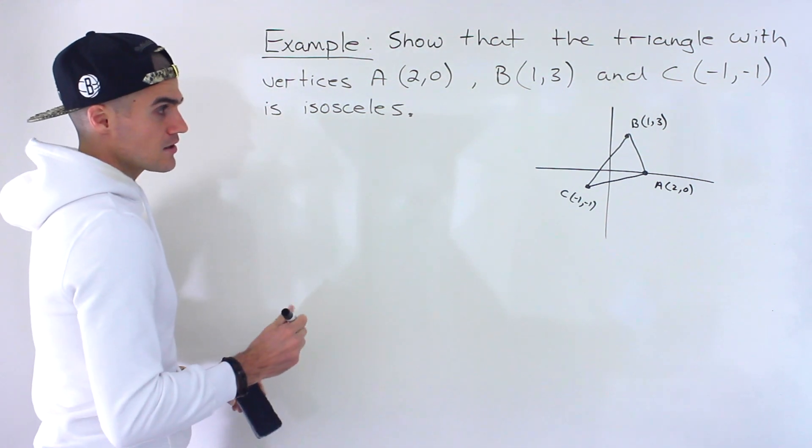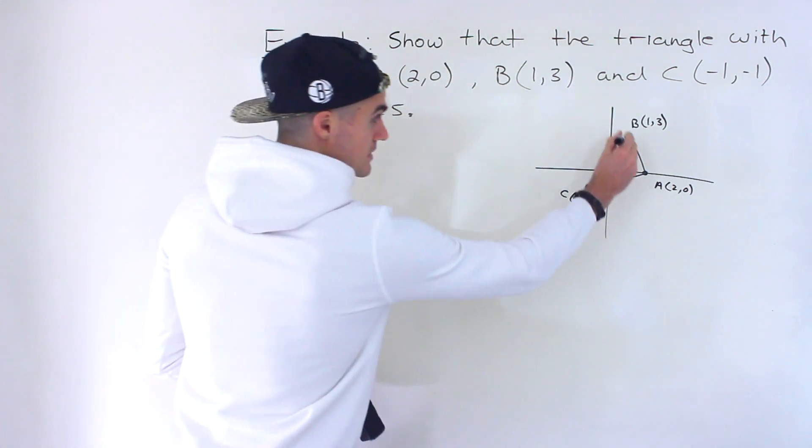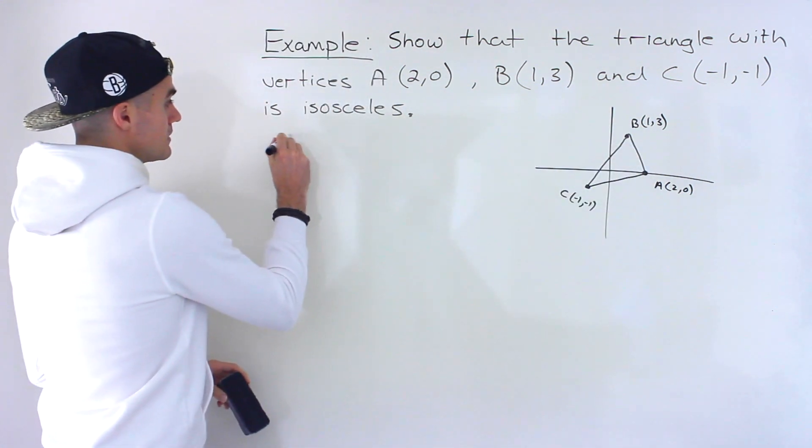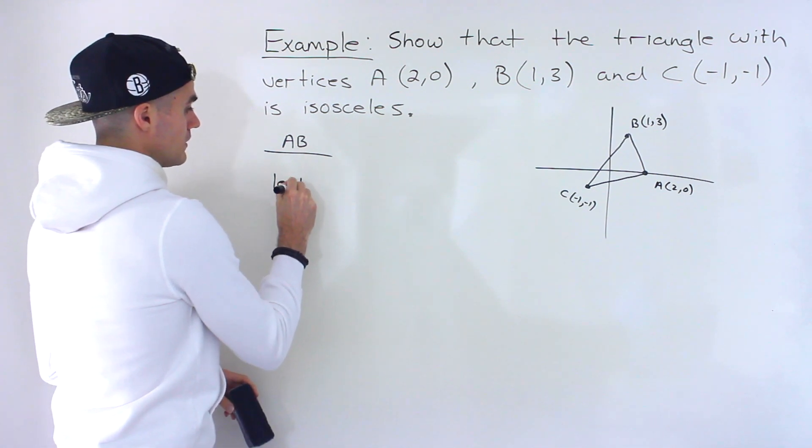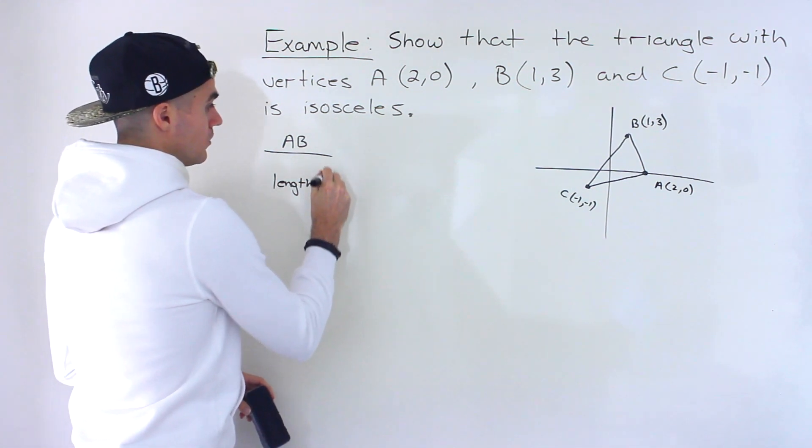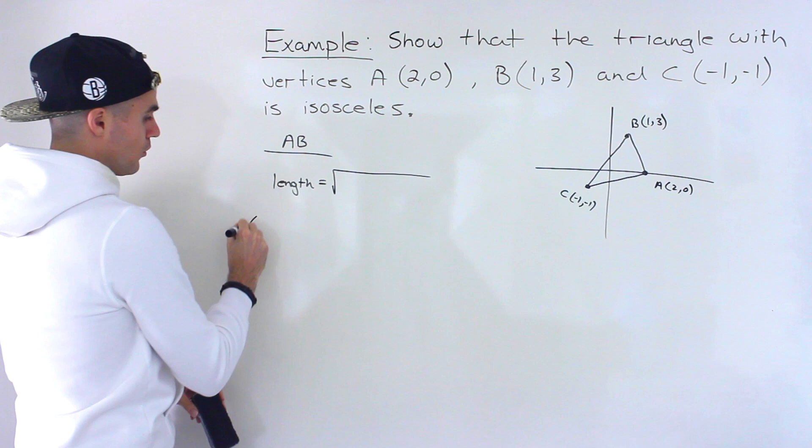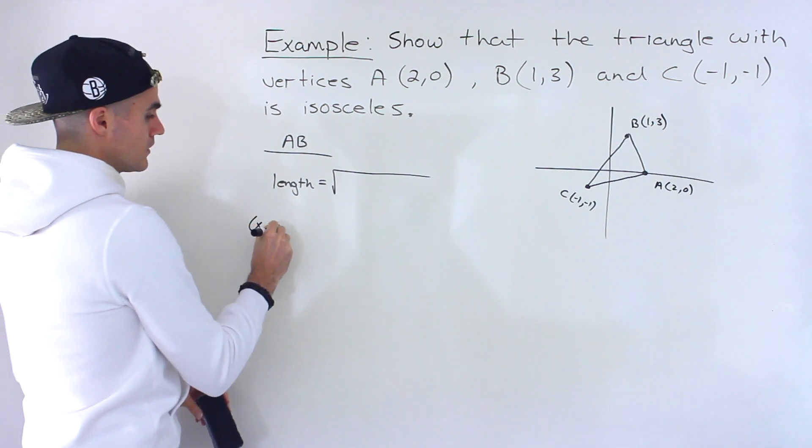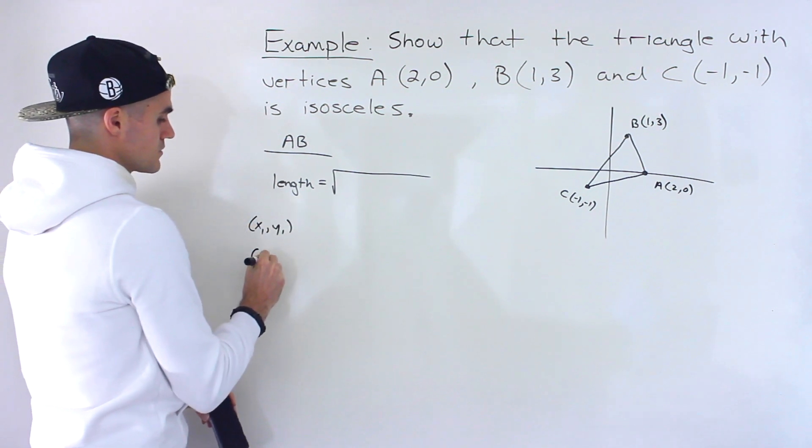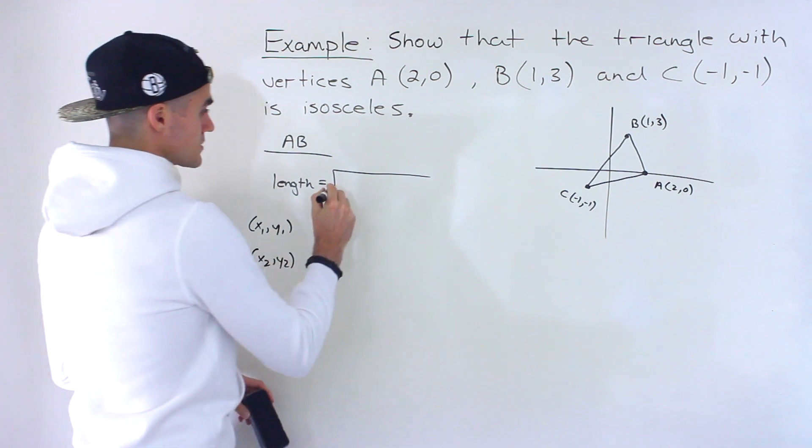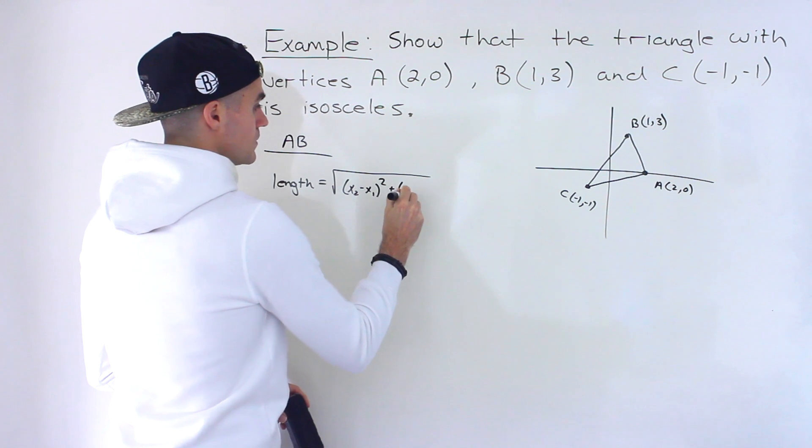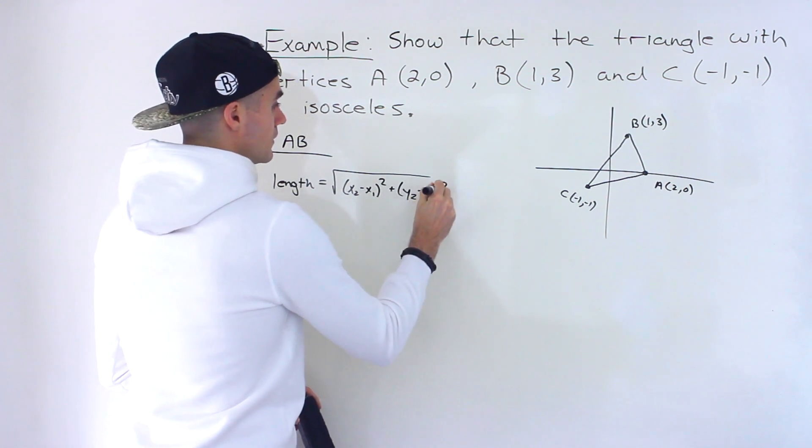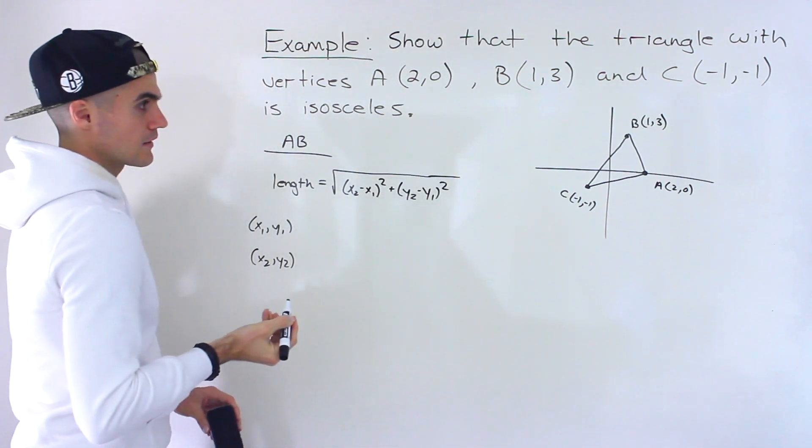So let's start off with getting this side over here, AB. Now the length formula in general between two points (x₁,y₁) and (x₂,y₂), what is it going to be? Well, it's going to be the square root of (x₂ minus x₁) squared plus (y₂ minus y₁) squared.